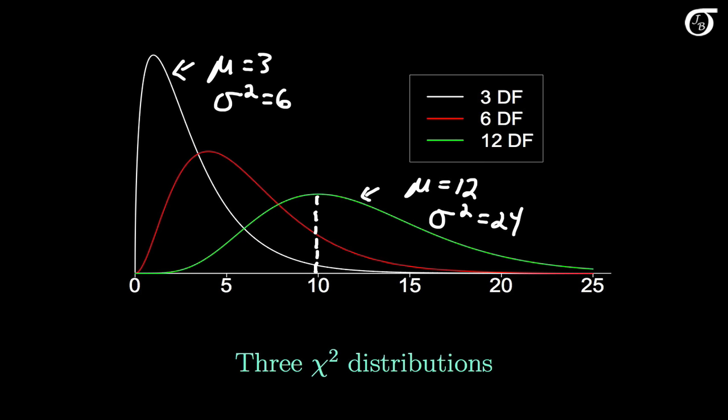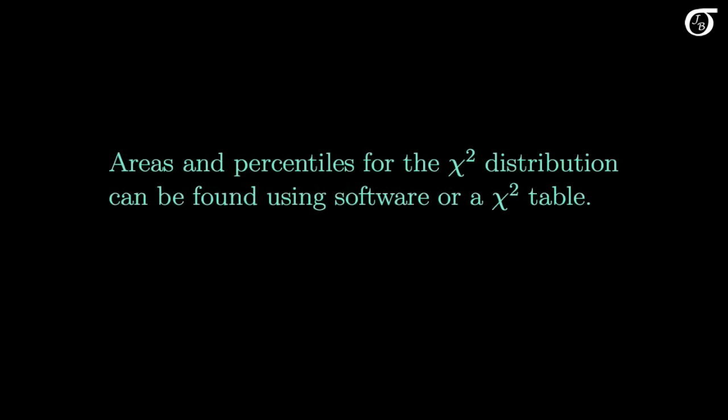In practical problems in probability and statistics, we need to find areas under the curve and percentiles of this distribution. Both of those cases involve integrating the probability density function. For the chi-square distribution there isn't a general closed form solution for that, and the probability density function must be integrated numerically. So we will find areas and percentiles for the chi-square distribution using software or a chi-square table.